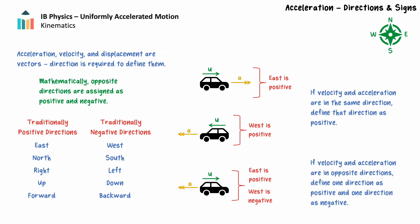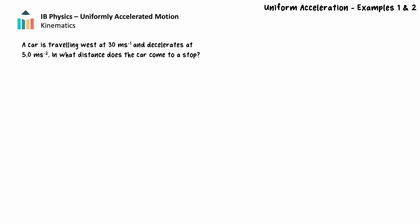If the velocity and acceleration are in opposite directions, then one direction is defined as positive and the opposite as negative. For example, if a car moving east accelerates west, then east could be defined as positive while west would be defined as negative. It's important to define positive and negative directions in each uniform acceleration problem you solve. Let's explore some more examples. A car is traveling west at 30 m/s and decelerates at 5.0 m/s². In what distance does the car come to a stop?